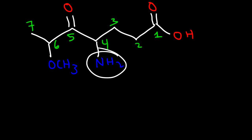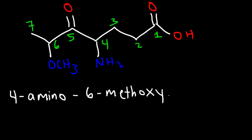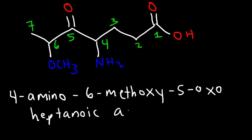Well, we'll need to put it in alphabetical order. The amino group comes first. So it's going to be 4-amino, and then here we have a methoxy group compared to the ketone, which as a substituent is called oxo. M comes before O in the alphabet. So this is going to be 4-amino, 6-methoxy, 5-oxo, and finally heptanoic acid. So 4-amino, 6-methoxy, 5-oxo, heptanoic acid.